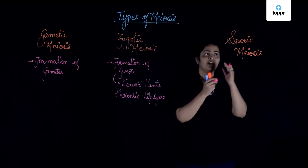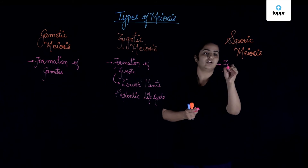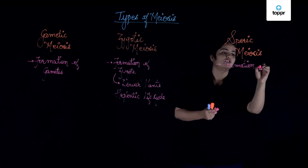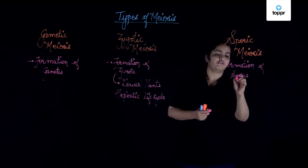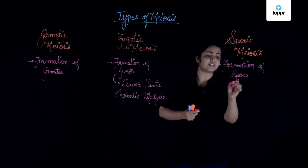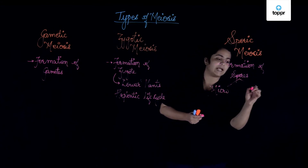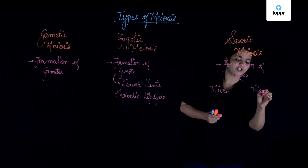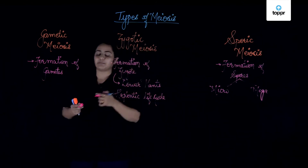When we talk about sporic meiosis, that means we have formation of spores — both microspores as well as megaspores. Formation of spores, that is microspores as well as megaspores, in the case of higher plants, is carried out by sporic meiosis.